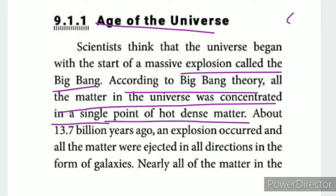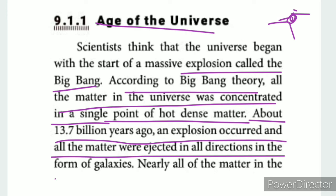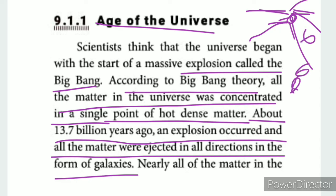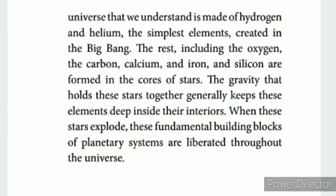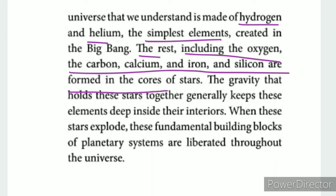According to the Big Bang theory, all the matter in the universe was concentrated at a single point of hot, denser material. About 13.7 billion years ago, an explosion occurred and matter was ejected in all directions in the form of galaxies. This matter is made of hydrogen and helium — the simplest elements created in the Big Bang — and these simplest elements are formed in the cores of stars.